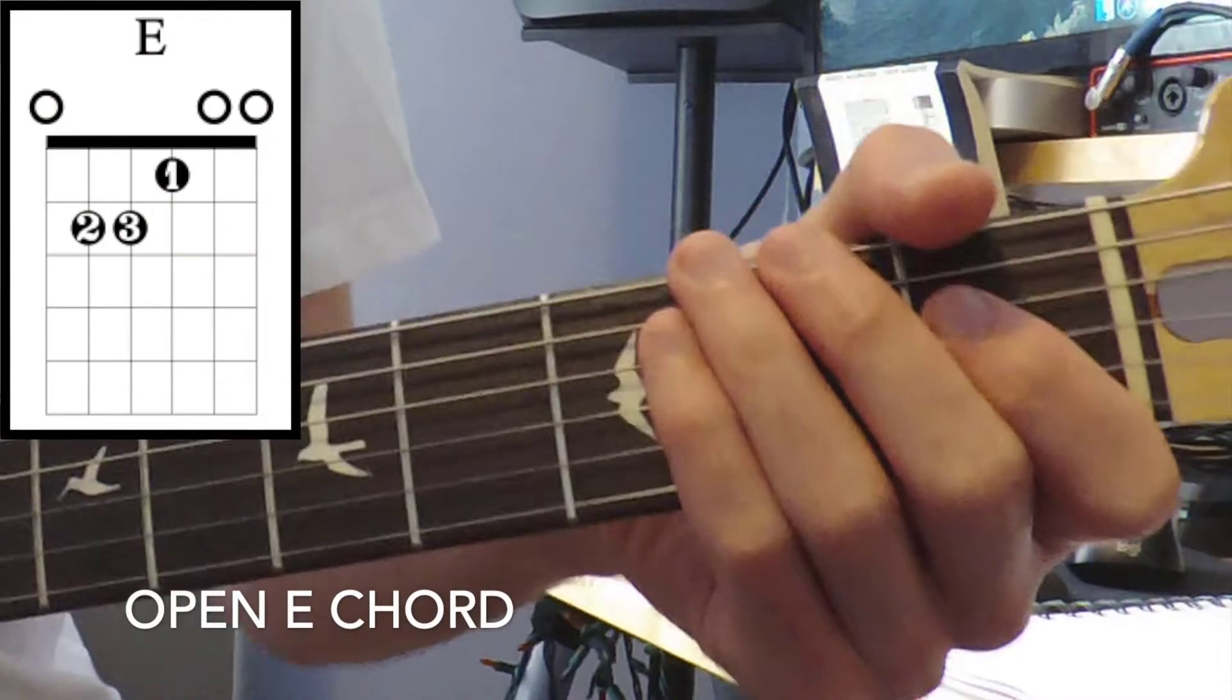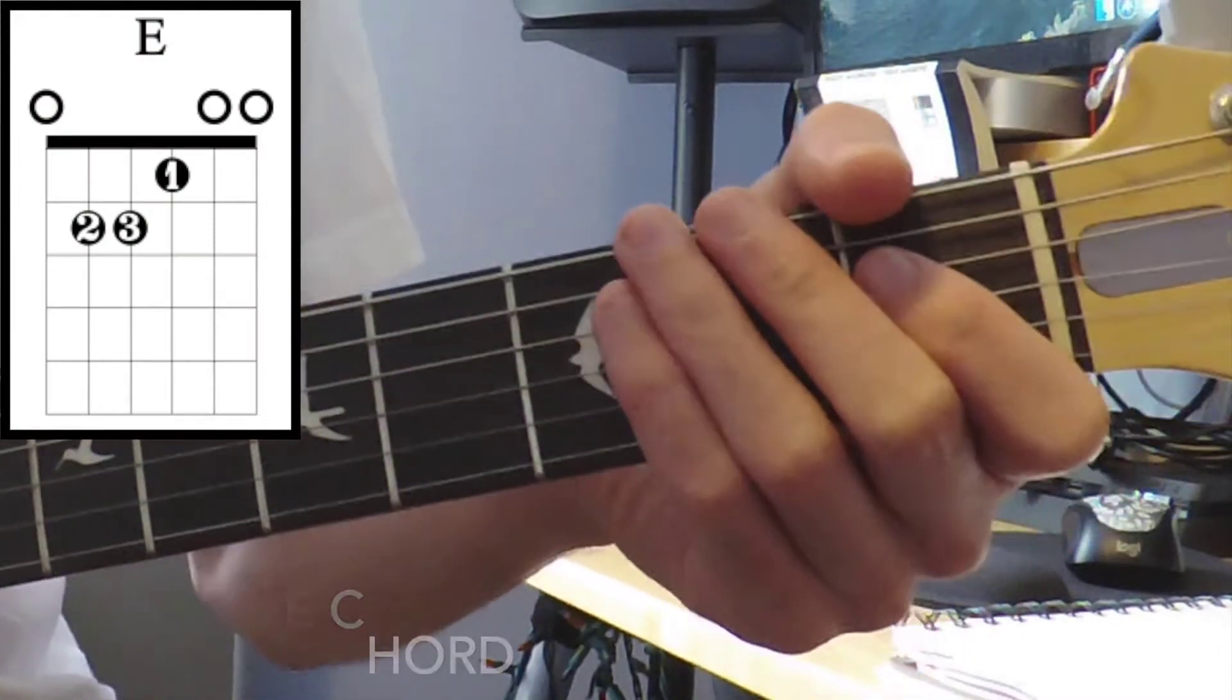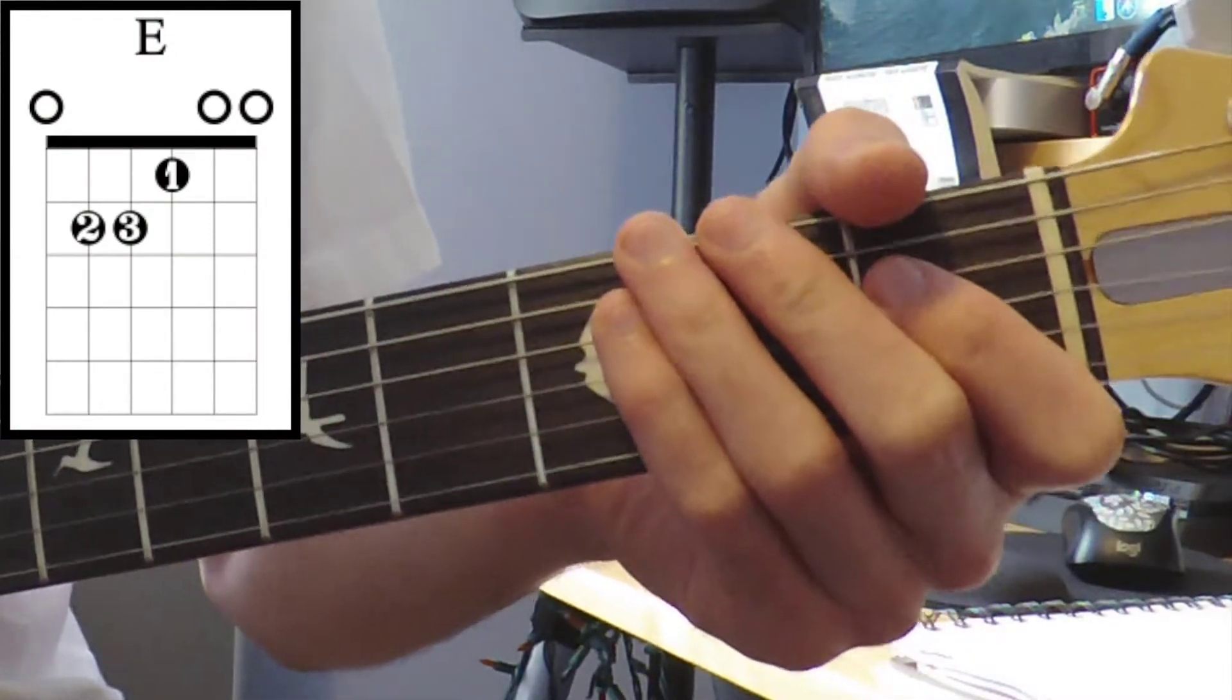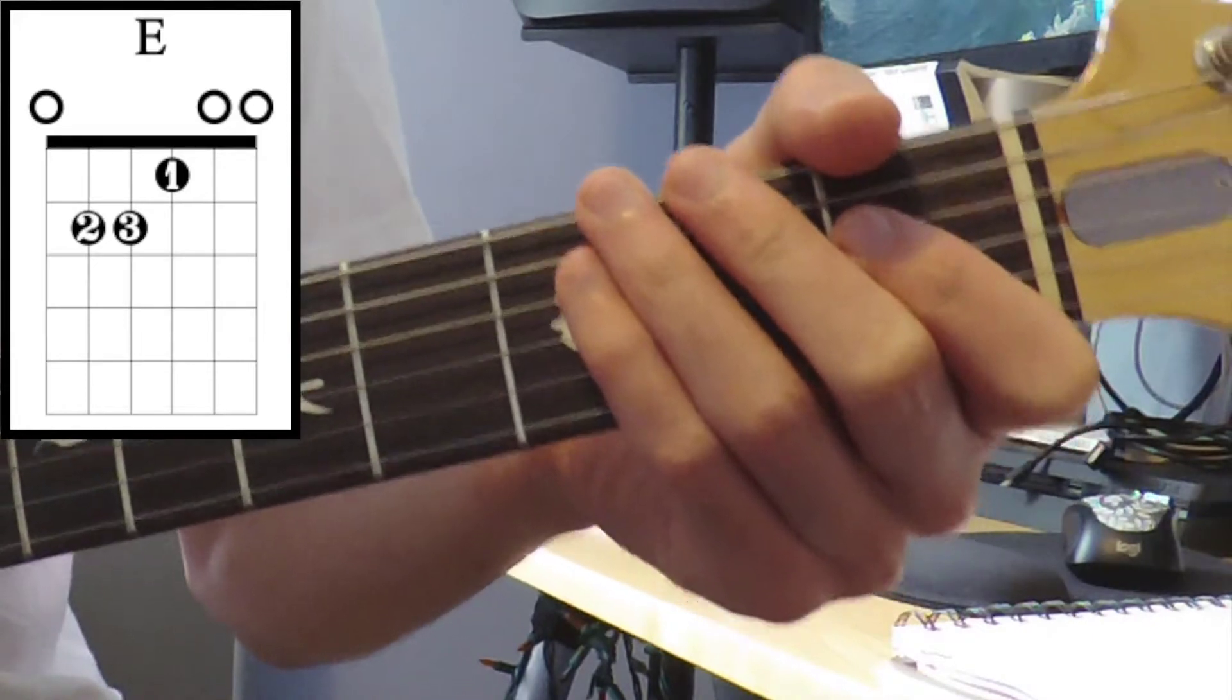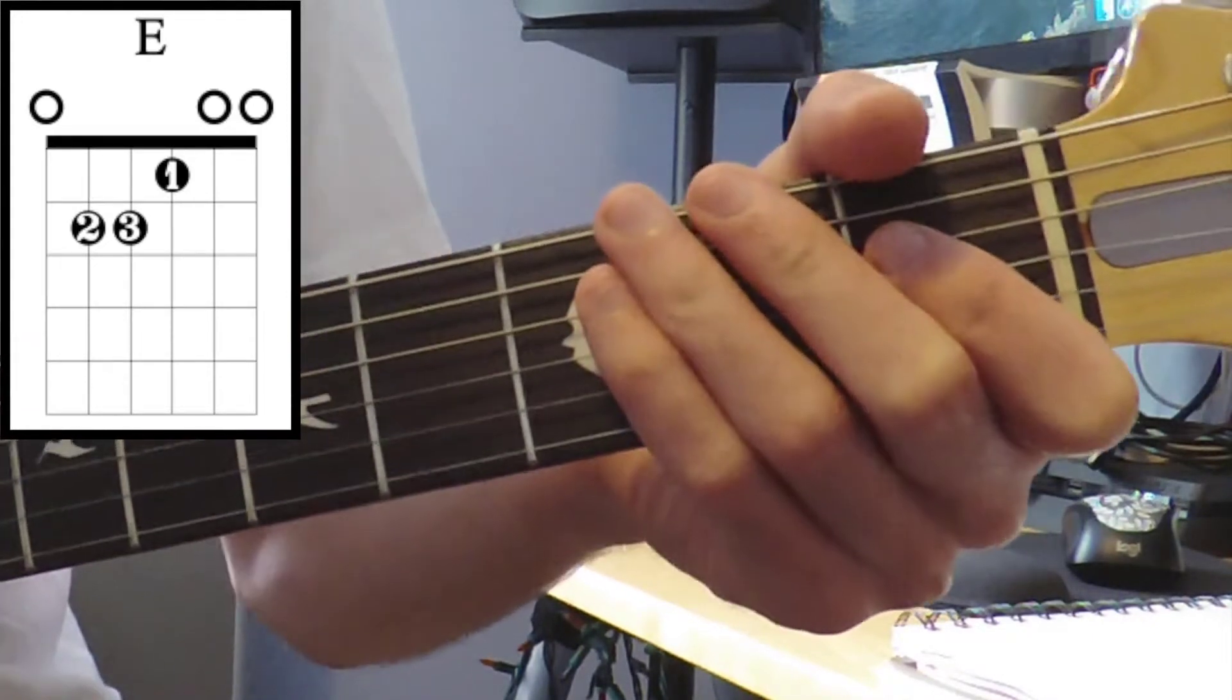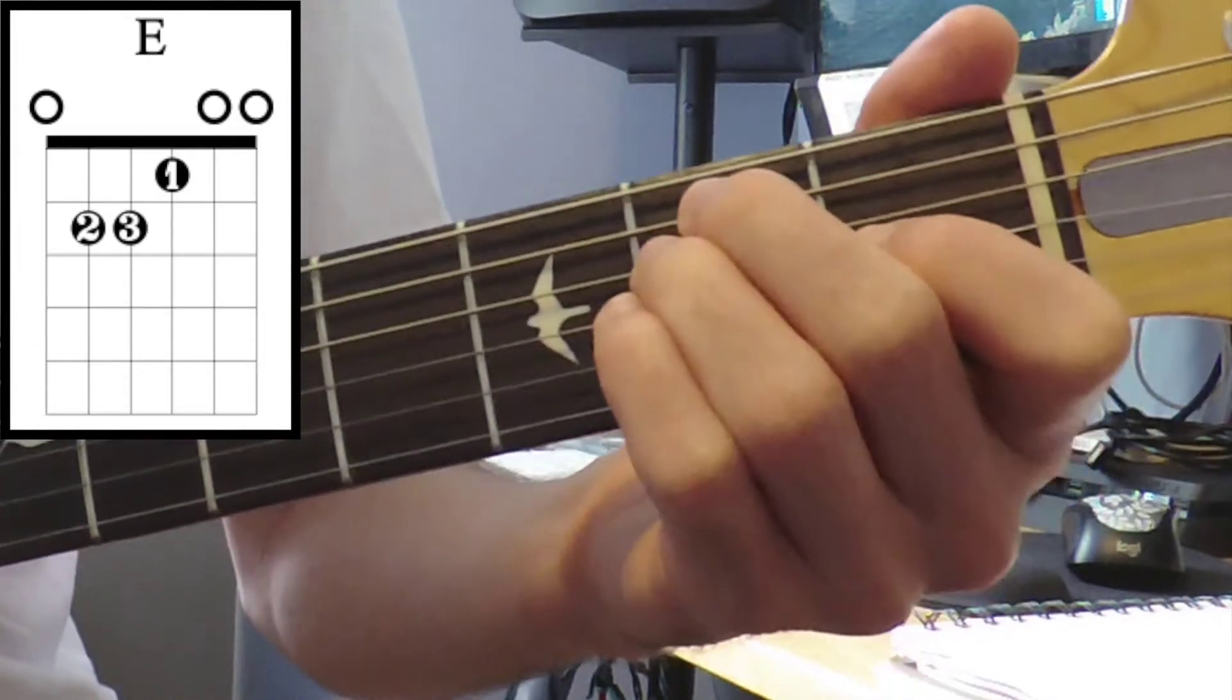All right, here's our E major chord, not to be confused with E minor. When you see just the letter on top, we can imply that chord is going to be an E. So we're going to play it open.